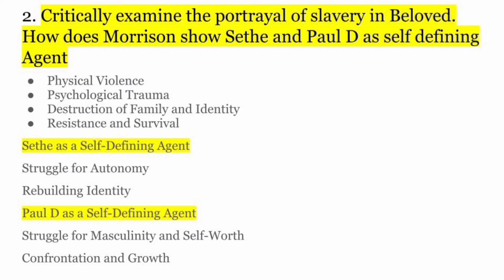Phir humara second question hai: Critically examine the portrayal of slavery in Beloved — how does Morrison show Sethe and Paul D as self-defining agents? Matlab ki, kis tariqe se joh Beloved novel hai uske andar slavery ko portray kiya gaya hai, dikhaya gaya hai, aur kaisi joh humari author hai Morrison, unhone Sethe ko aur Paul D ko ek self-defining agent ke tariqe se dikhaya, ki yeh joh log hai na, woh slavery ko pura define kar rahe hai.